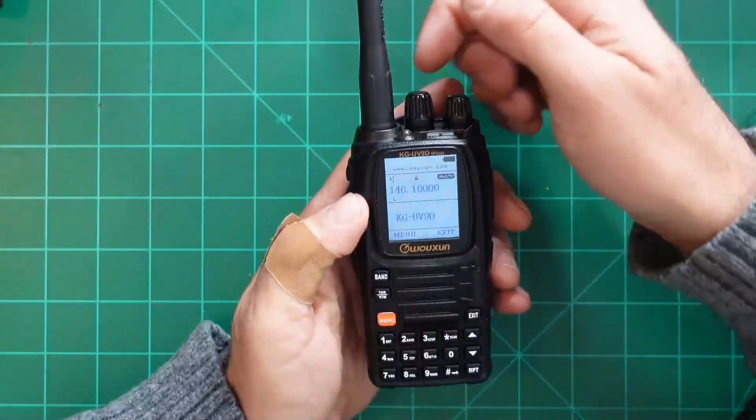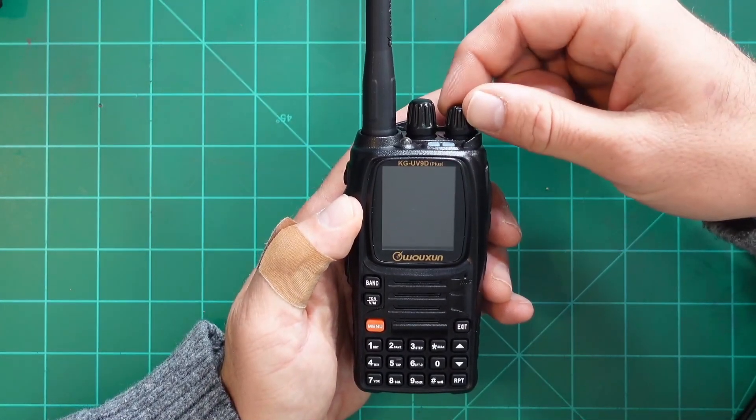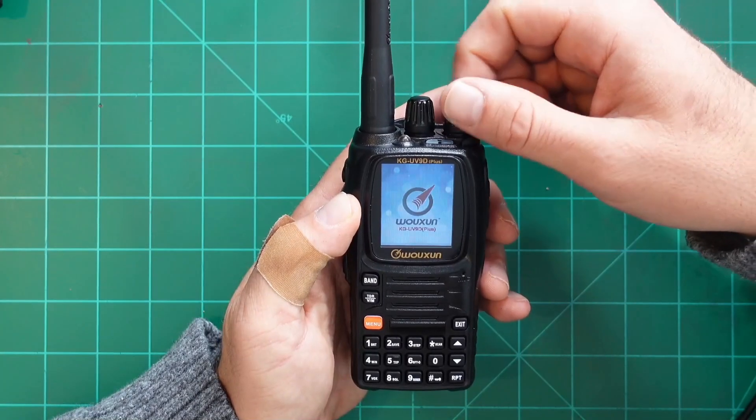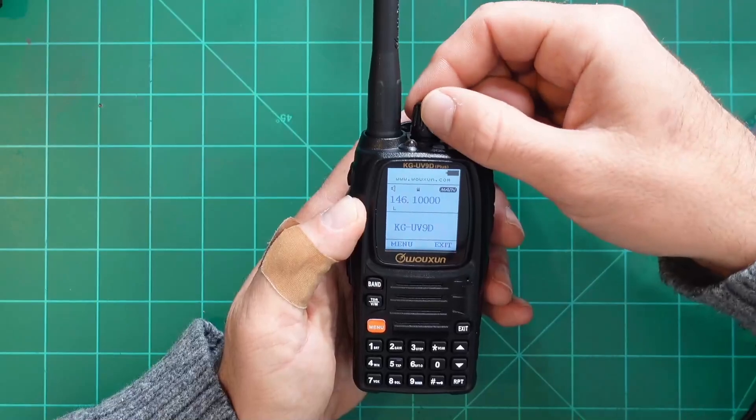On the top of the radio, you have a couple things here. This is your power button. So you'll feel a click and you'll hear a click when it turns on or off. And then that becomes your volume button.